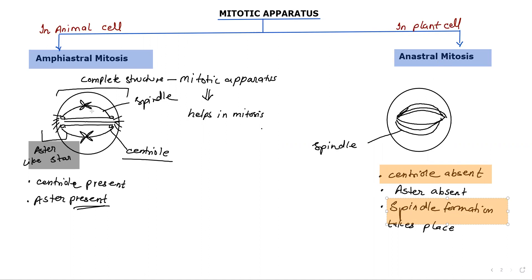The spindle — and the mitotic apparatus, also called the spindle apparatus — consists of spindle fibers, which are nothing but microtubules, along with their associated proteins. So the mitotic apparatus is made up of microtubules and microtubule-associated proteins.